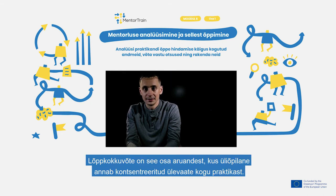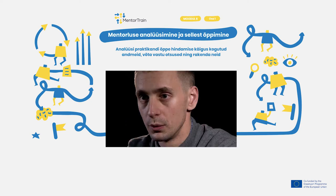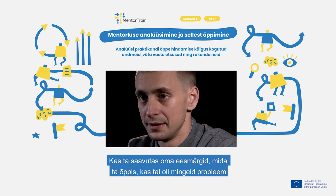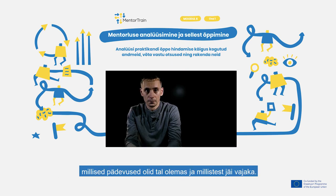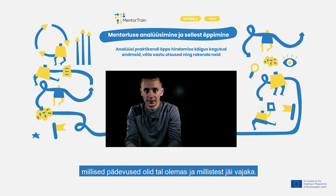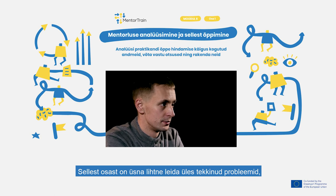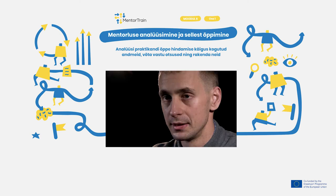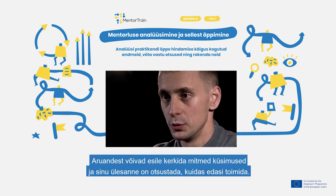The final analysis is a part of the report where students give a concentrated overview of the whole apprenticeship. Did they achieve their goals? What did they learn? Did they have any problems? What competencies did they have and what competencies did they lack? From this part, it is fairly easy to see problems that emerge. But the tricky part is to decide what to do to solve them. Several questions can arise from the report and you need to decide what to do.